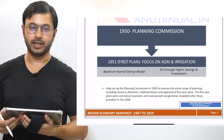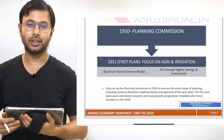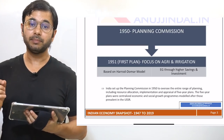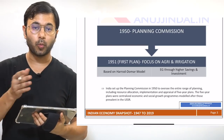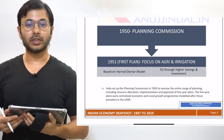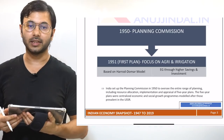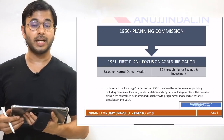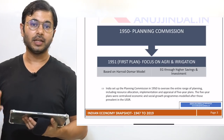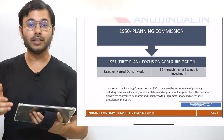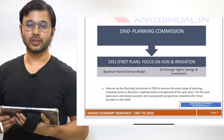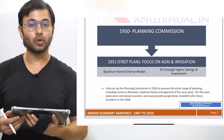Coming back to the era after independence, in 1950, the Planning Commission was set up. Its main purpose was to create a well-defined timeline for the next five years, as well as a long-term vision document for 20 years in order to guide development in India. In the first five-year plan, created and approved in 1951, two things were carried out — the Harod-Domar Model was adopted as the foundation.